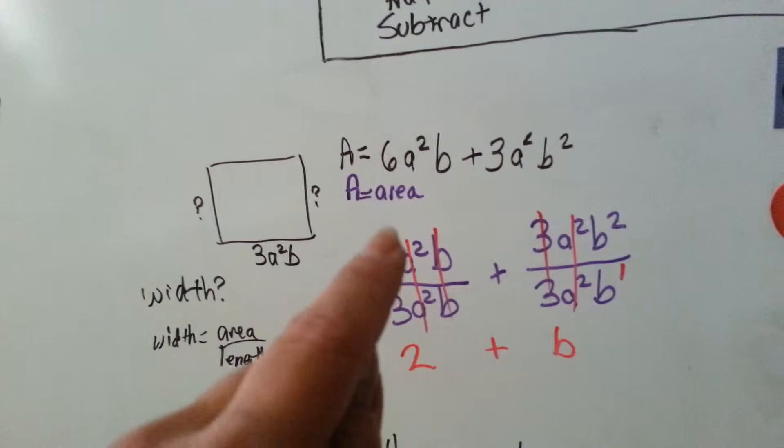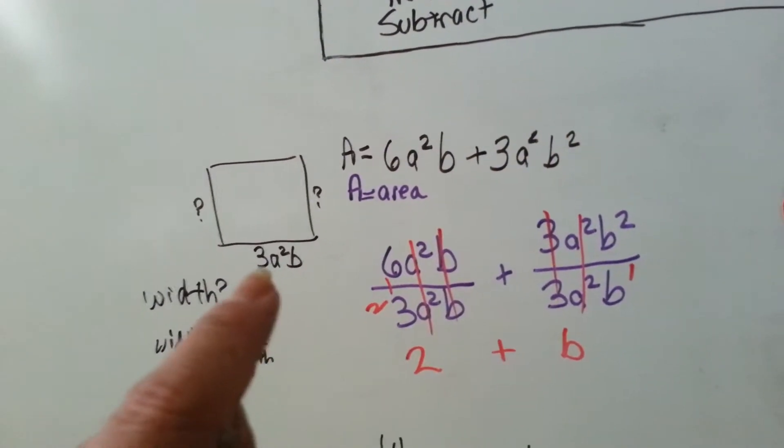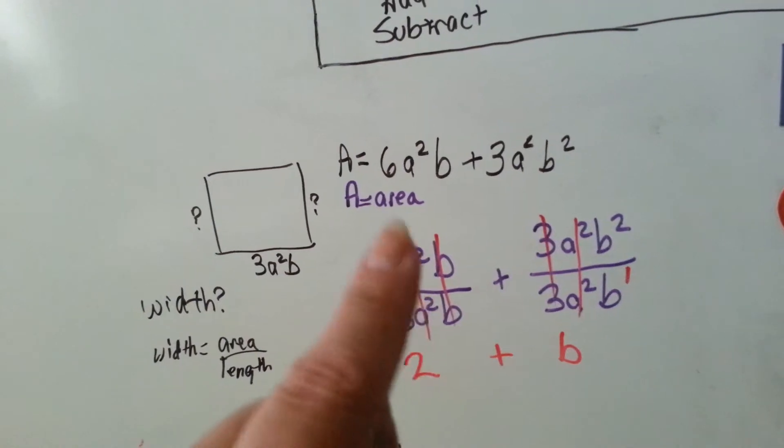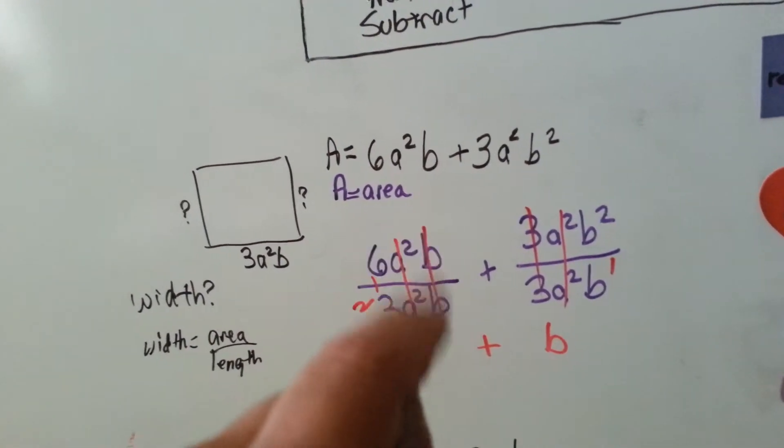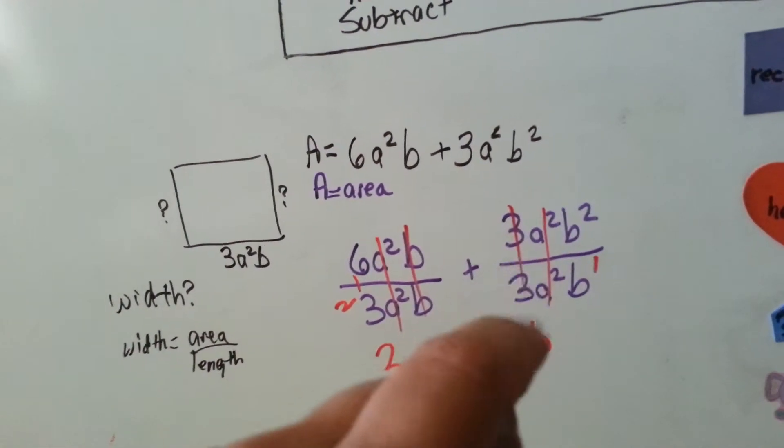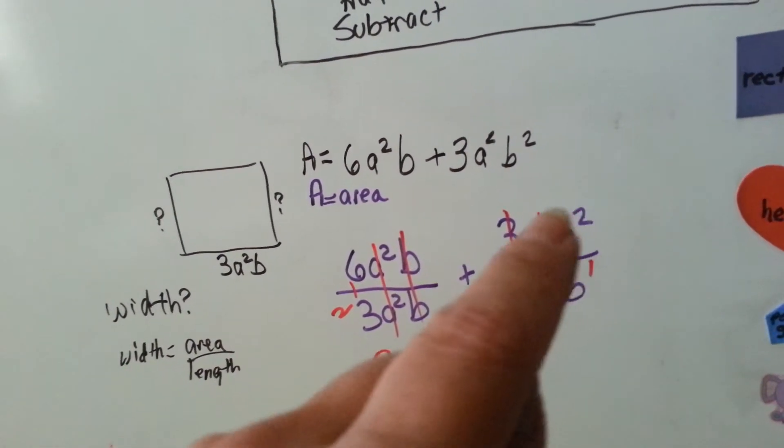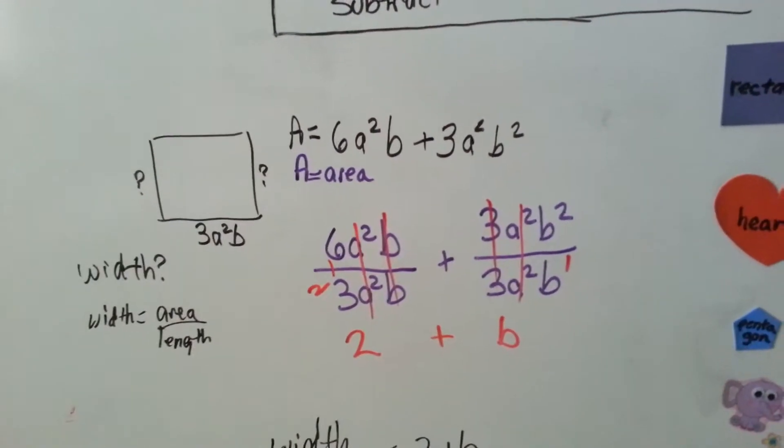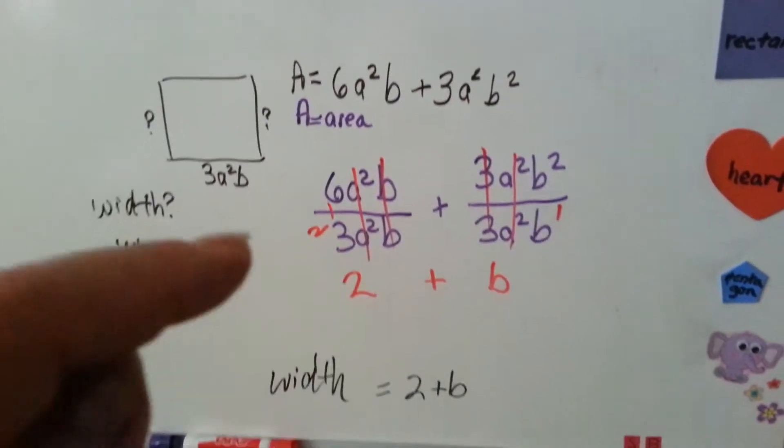We're going to divide each of these by the 3a squared b. So, 3 goes into 6 two times, the a squareds cancel each other out, the b's cancel each other out, we've got our plus sign, the 3a squareds cancel each other out, and b to the second, take away a b, is 1, so we have just a b. So, our answer is 2 plus b.